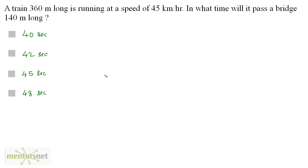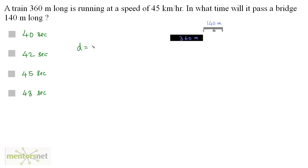A train 360 meters long is running at a speed of 45 kilometers per hour. In what time will it pass a bridge 140 meters long? The situation is like this: you have a bridge which is 140 meters long and a train that's 360 meters long. This train will have to travel the bridge length as well as its own length in order to pass that bridge. So the distance equals the train's length, 360 meters, plus the bridge length, 140 meters — giving a total distance of 500 meters.